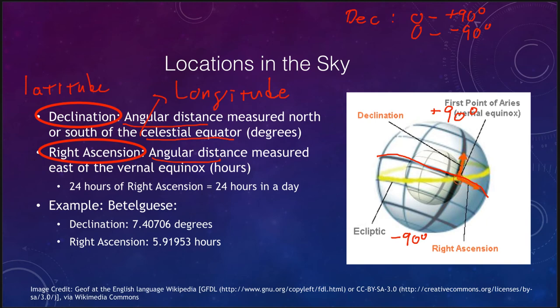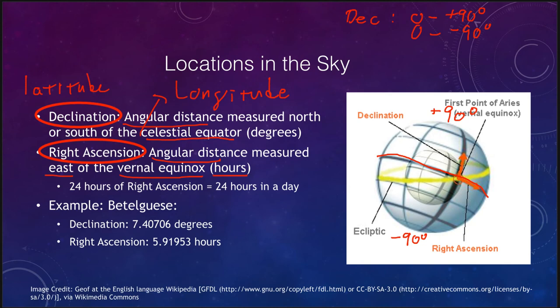We also need to find out how far we are along the equator, and that is the right ascension. Much like longitude, it is measured east of the vernal equinox. Just as the Greenwich Meridian is a selected reference point, the vernal equinox is simply a point that astronomers have agreed on — it is the position of the sun on the first day of spring. Notably, right ascension is measured in hours, not in degrees. There are 24 hours of right ascension and 24 hours in a day, making it convenient for working timing into astronomy.